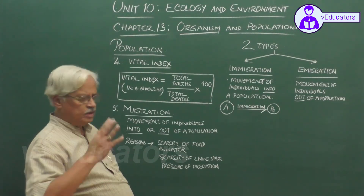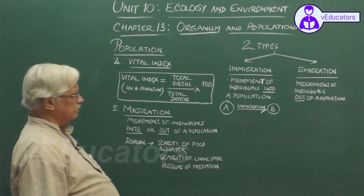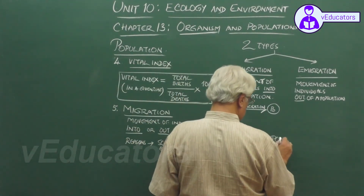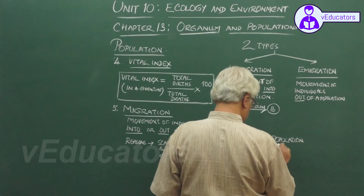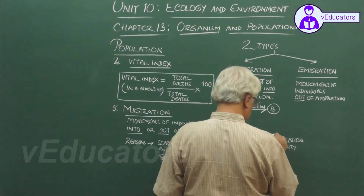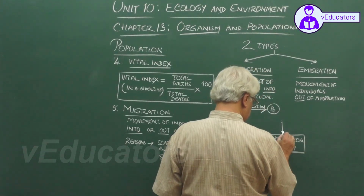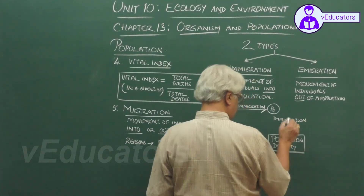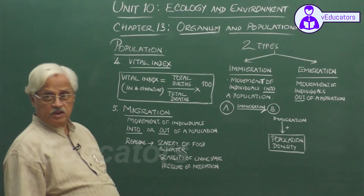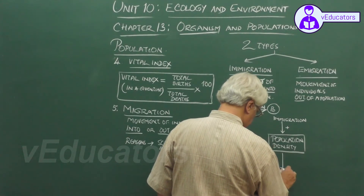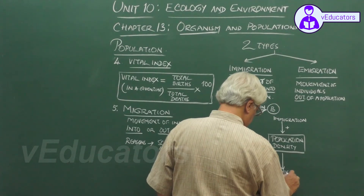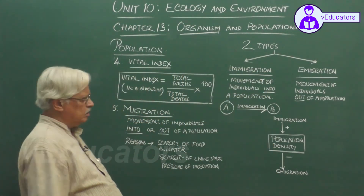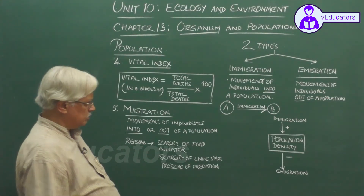Population density fluctuates and keeps changing because of birth rate, death rate, immigration, and emigration. These four factors influence population density. Immigration adds to the population density, while emigration decreases the number of individuals in the population, so density is affected.